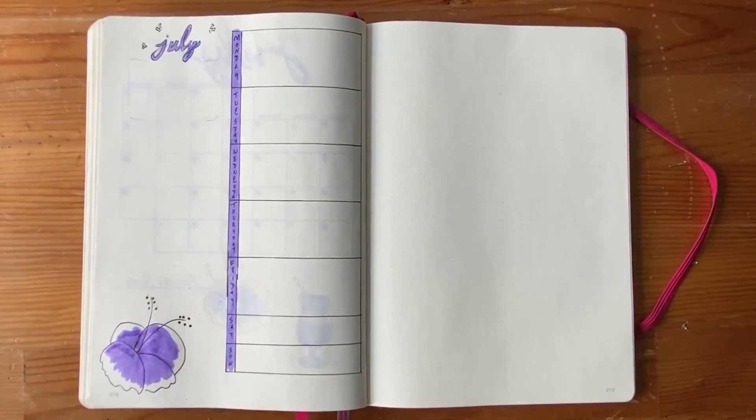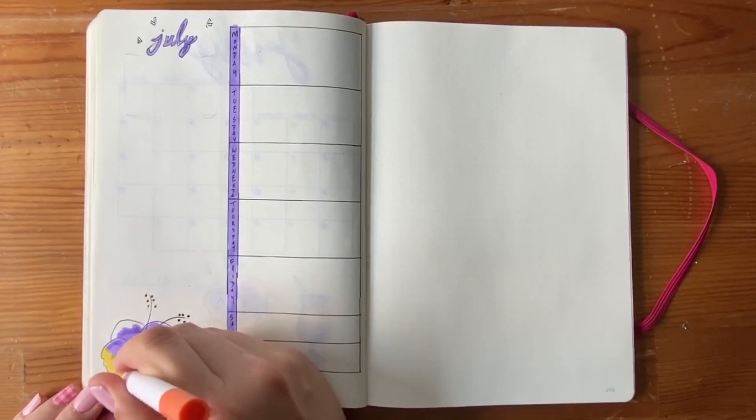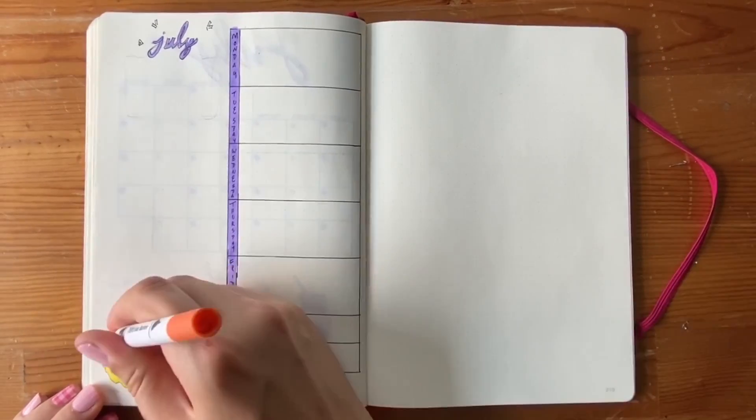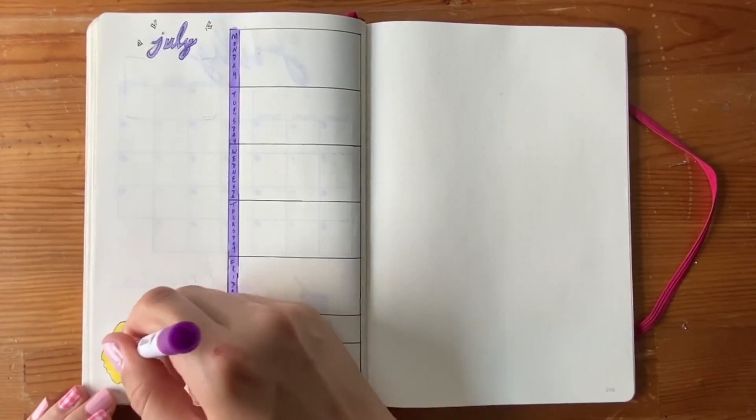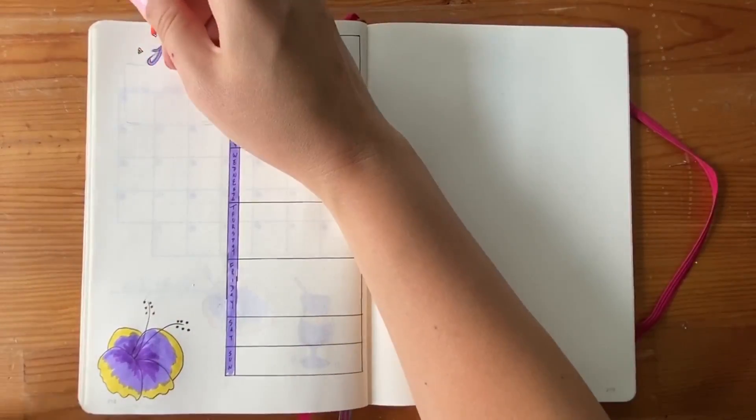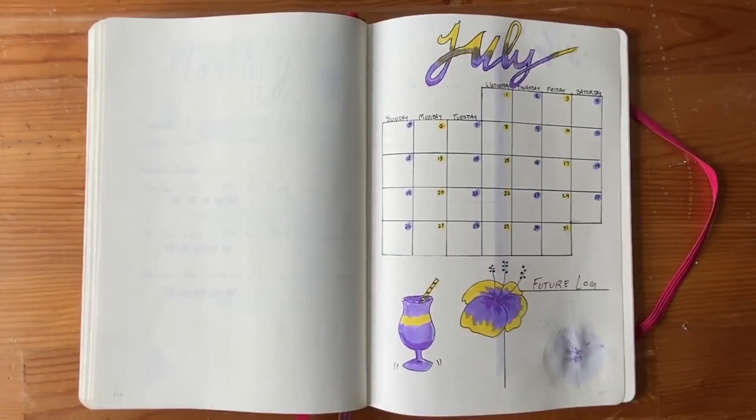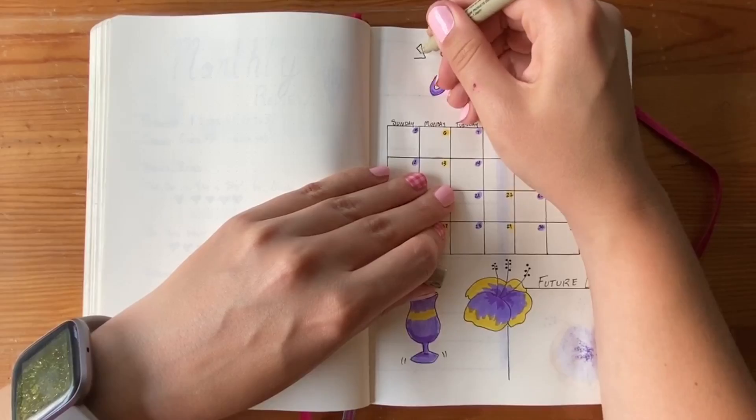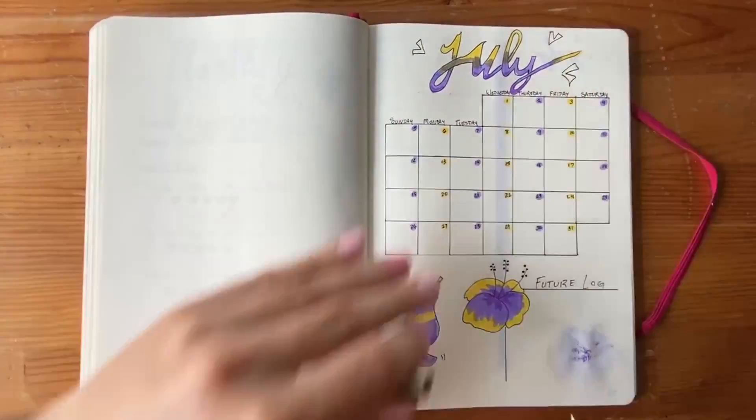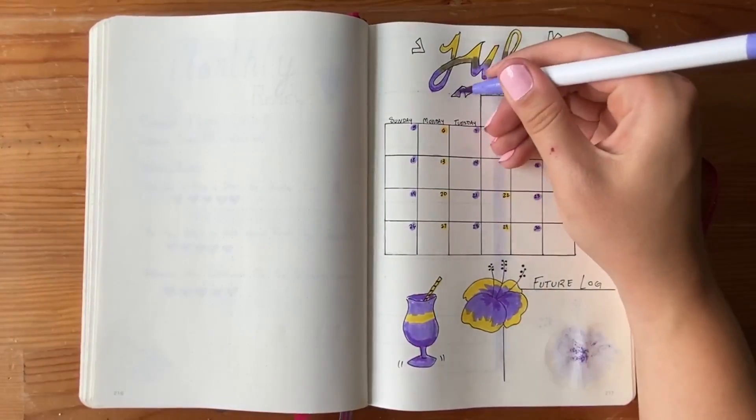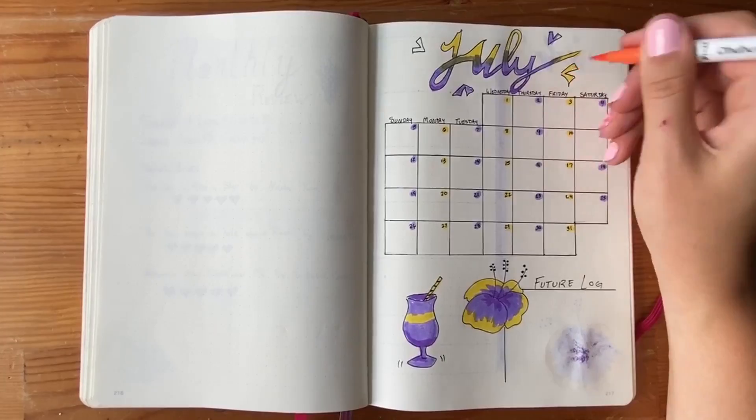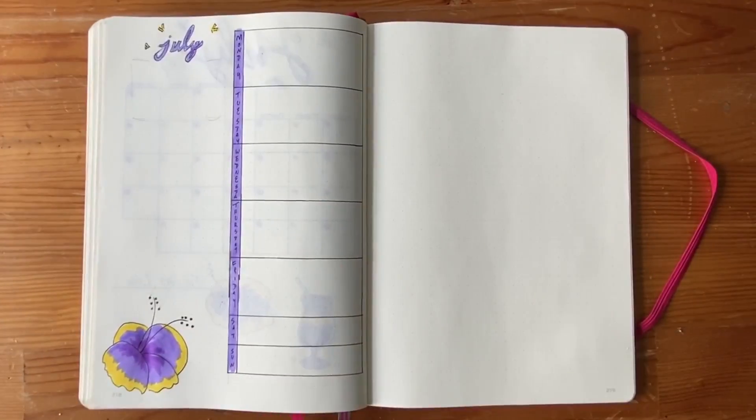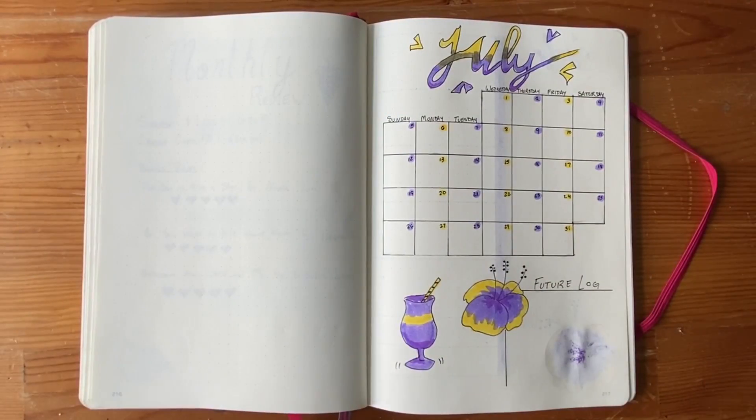Now something weird happened you'll see when I flip back. For some reason the same colors and the same markers completely bled through between these two pages and I don't know why it didn't do it with the first hibiscus flower. Maybe I just went over it while the marker was still wet I don't know, but I did get a little bit of that bleed there.